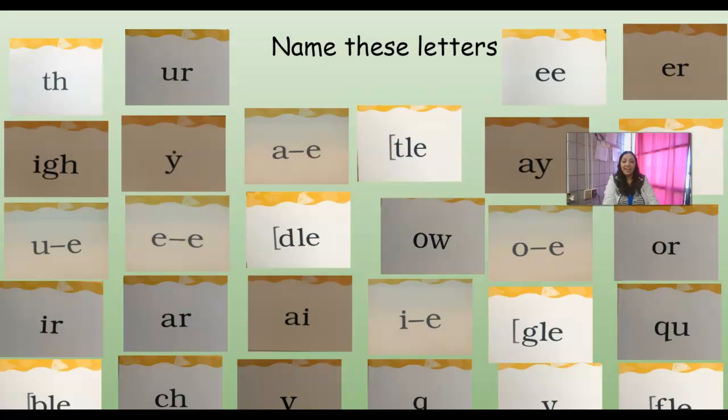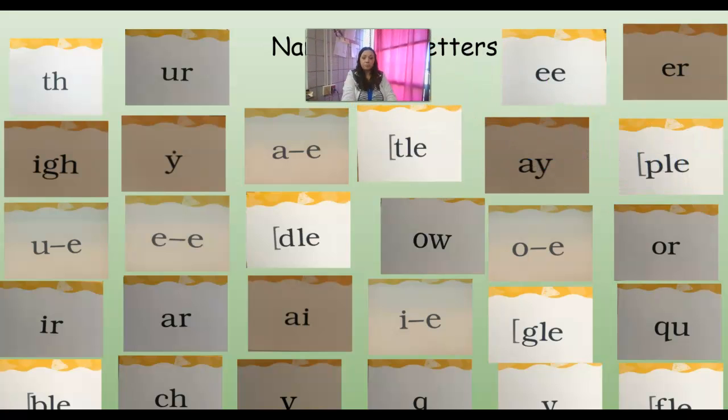All right, we're going to go ahead and name our letter cards real quick. Are you ready? So we have digraph TH, combination UR, digraph EE, combination ER, trigraph IGH. We have vowel Y, A consonant E, final syllable TLE, digraph AY, final syllable TLE.